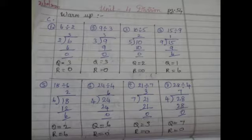The first sum is 6 divided by 2. In the long division method, we write the divisor outside and the dividend inside.